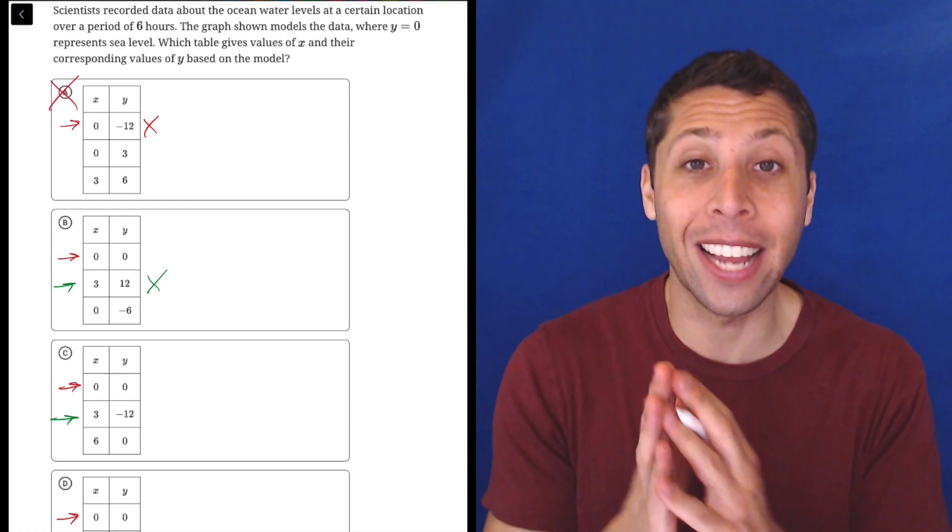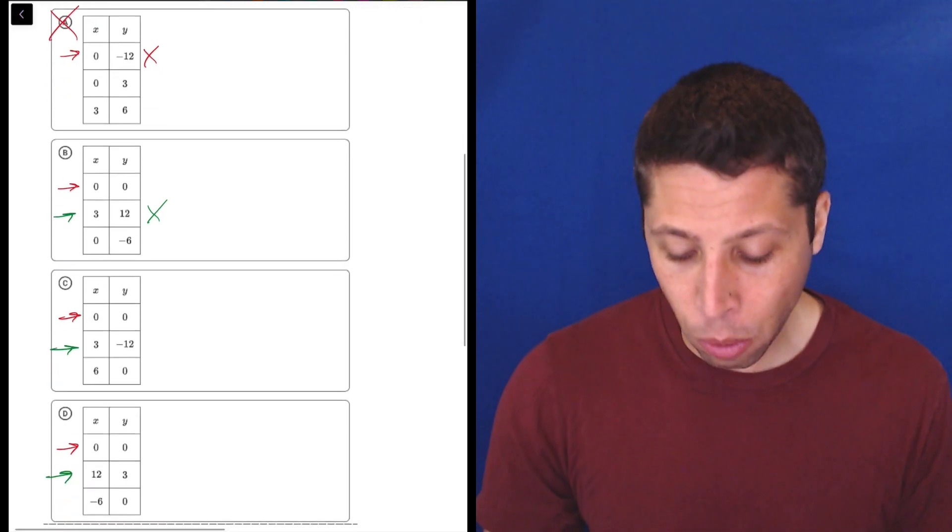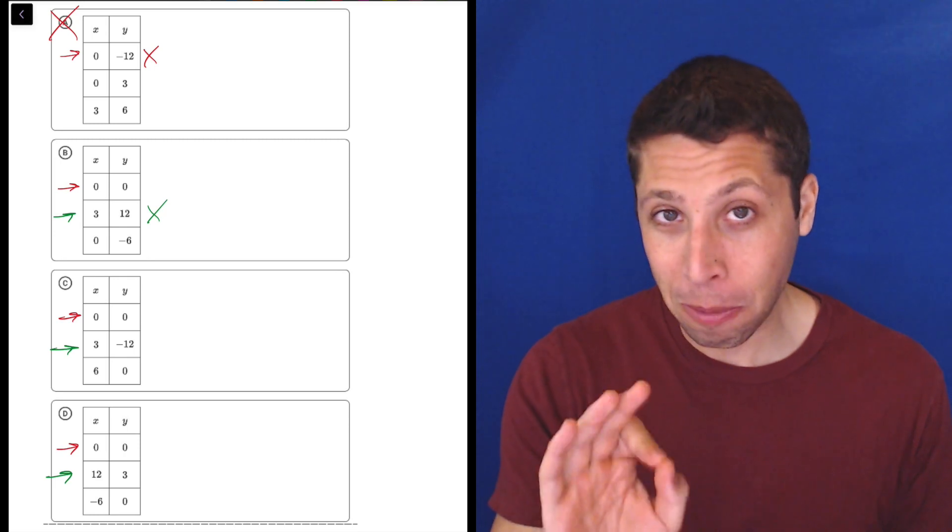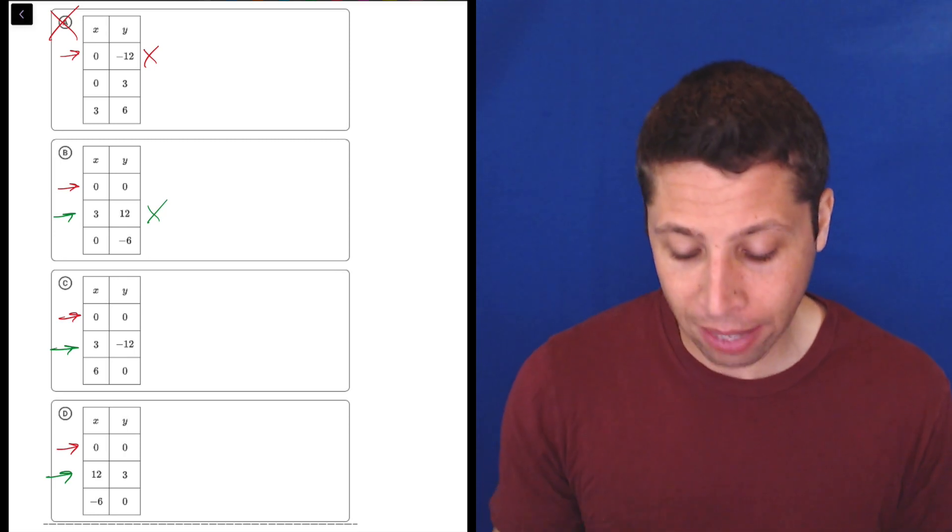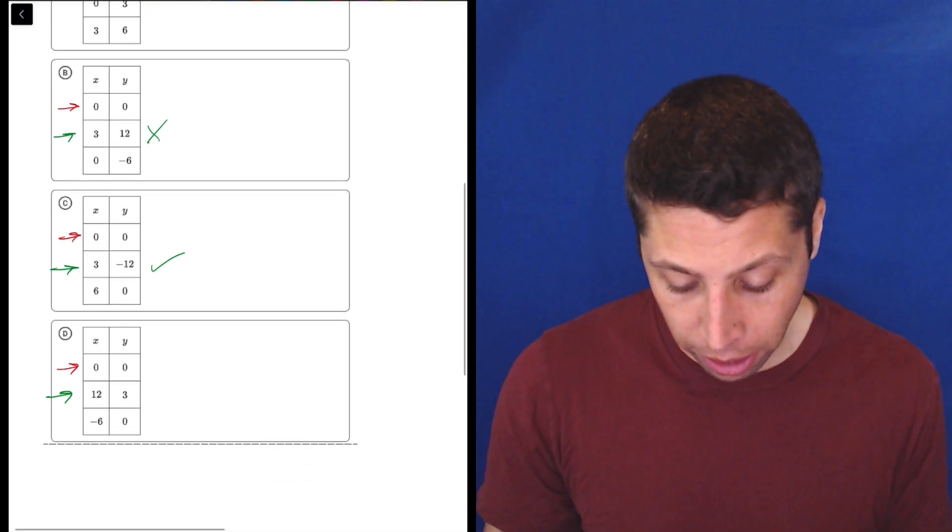The X-Y plane has direction. We can go positive or negative both up and down and left and right. So don't make that mistake. It's especially important when we're reading a graph that we don't forget negatives. Three 12 is the trap answer, but here's three negative 12. That's what we wanted.